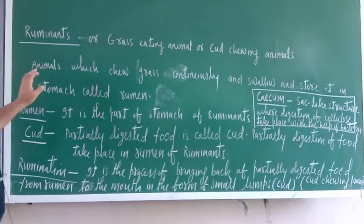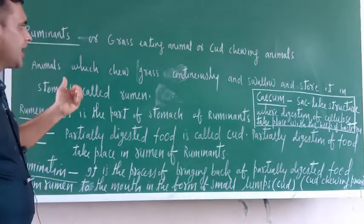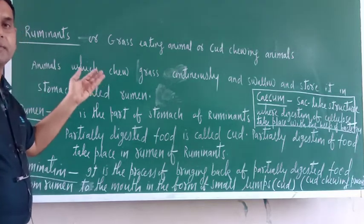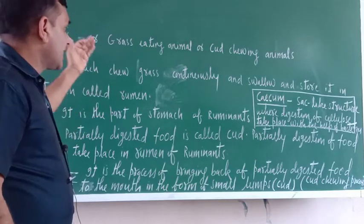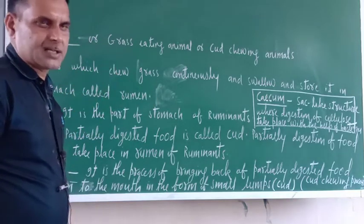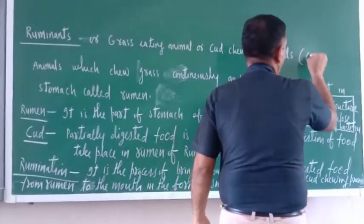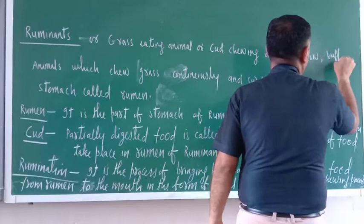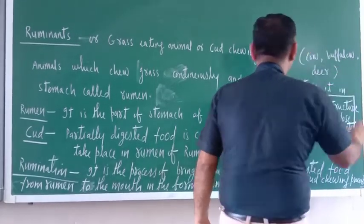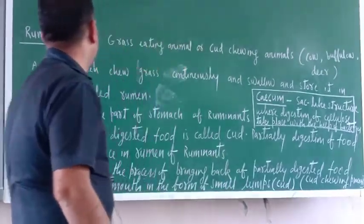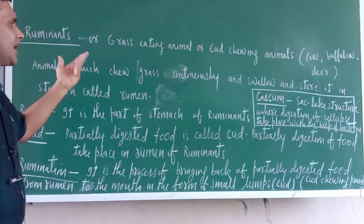So first, what are ruminants? Ruminants are nothing but grass-eating animals. You can write the examples also. Grass-eating animals are cud-chewing animals. Examples include cow, buffalo, and deer. These are called grass-eating animals. So ruminants means grass-eating animals or cud-chewing animals.